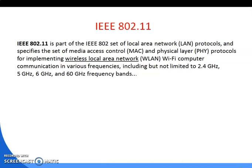The IEEE adopted the first standard of wireless LAN. As the standards number indicates, the standard belongs to the group of 802.x LAN standards, which means it specifies the physical and medium access layer adapted to the special requirements of wireless LAN, but offers the same interface to higher layers to maintain interoperability. The primary goal of the standard was the specification of a simple and robust wireless LAN which offers time-bounded and synchronous services.